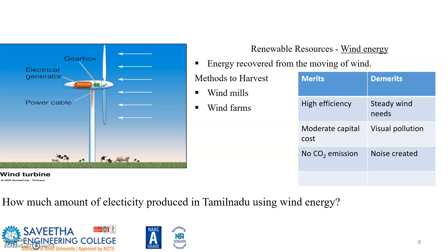The merits and demerits of wind energy are listed. Merits: high efficiency and moderate capital cost with no carbon emissions. Demerits: requires steady wind, causes visual pollution, and noise is greater. A question is provided: how much amount of energy is produced using wind energy in thermodynamics? Please provide the correct information.